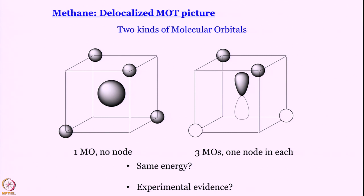The experimental evidence comes from photoelectron spectroscopy. Ionization energy means supplying enough energy to promote an electron from an orbital to an infinitely high level where it no longer feels nuclear attraction. If there are two different MOs in a molecule, we can expect two different ionization energies. An electron can be ejected from the lower-energy level or from the higher-energy level — call these ε1 and ε2.